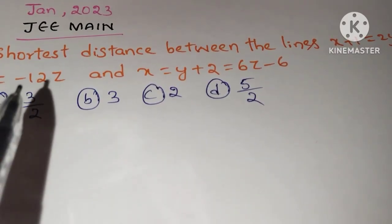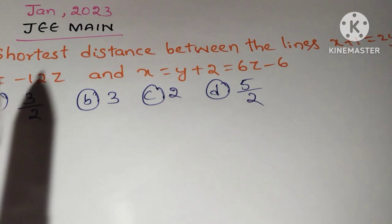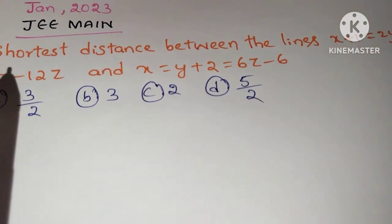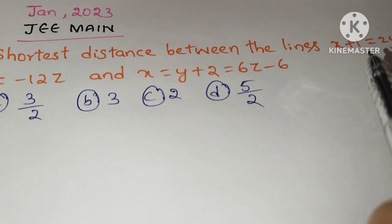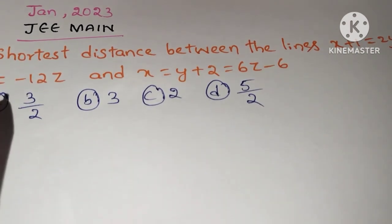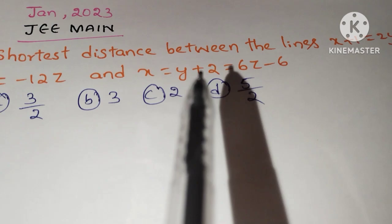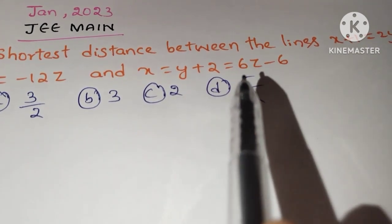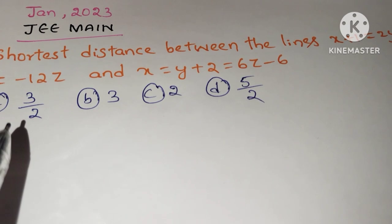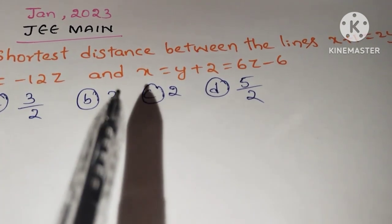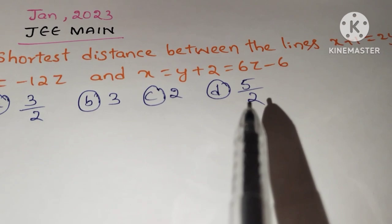Next important question. This question was asked in 2023 January. The question is: shortest distance between the lines x plus 1 equals 2y equals minus 12z and x equals y plus 2 equals 6z minus 6. The given options are: a) 3 by 2, option b) 3, option c) 2, option d) 5 by 2.